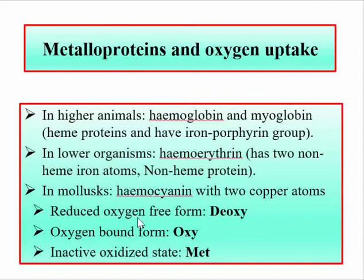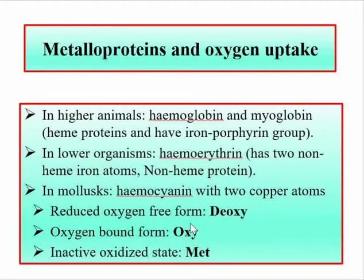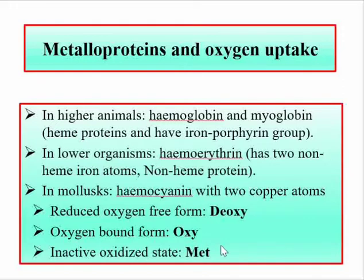These metalloproteins generally exist in three states. In the deoxy form, no oxygen is attached. In the oxy form, oxygen is coordinated to the iron center. The met form is the inactive form where Fe2+ is oxidized to Fe3+. So we have deoxymyoglobin, oxymyoglobin, metmyoglobin, deoxyhemoglobin, oxyhemoglobin, and methemoglobin.